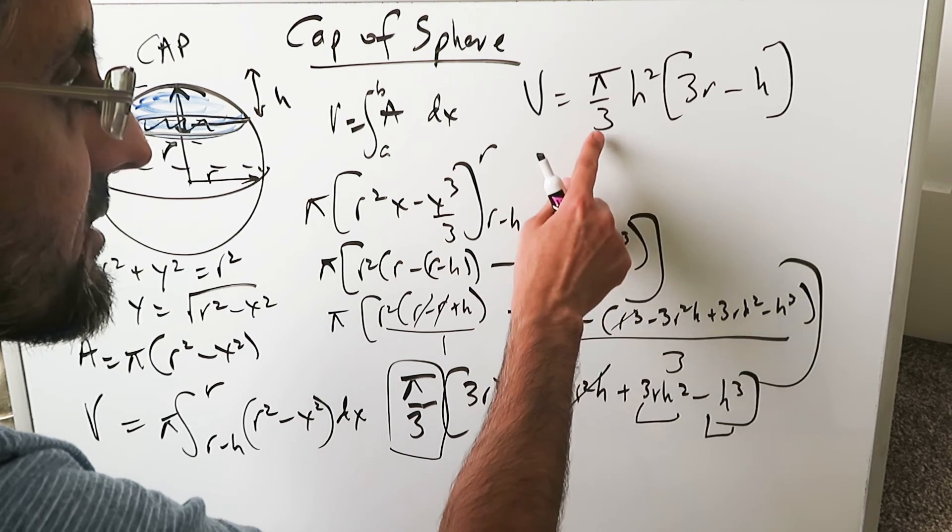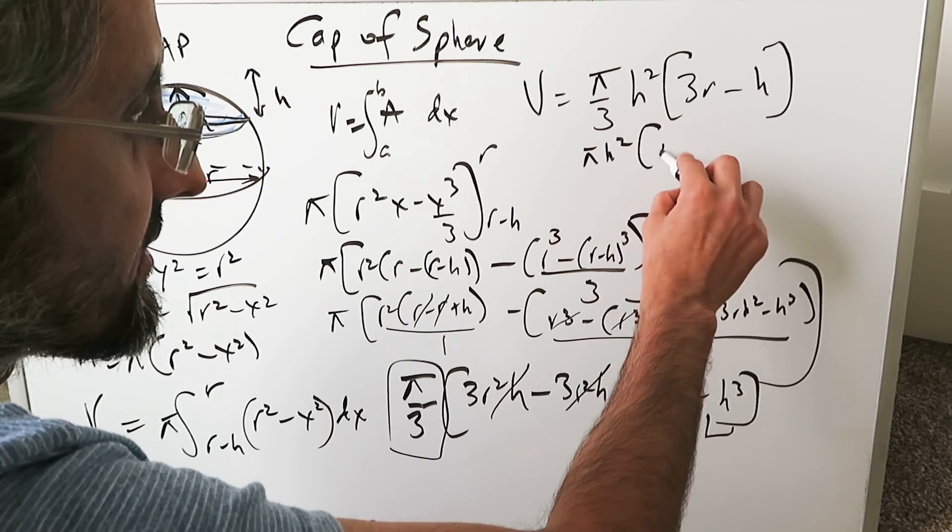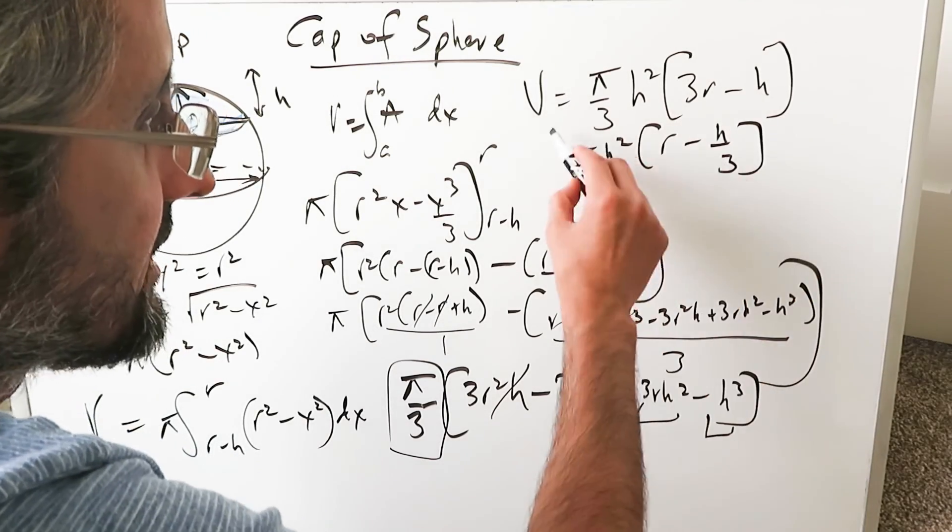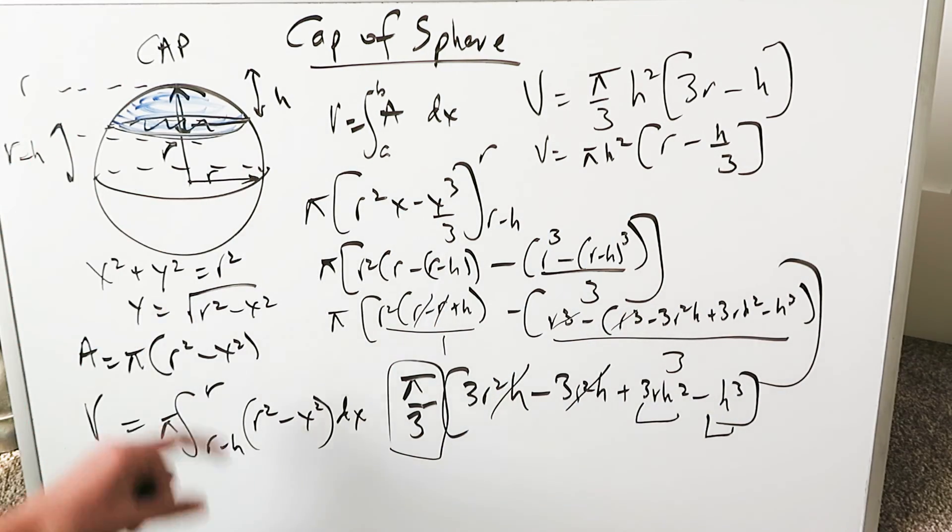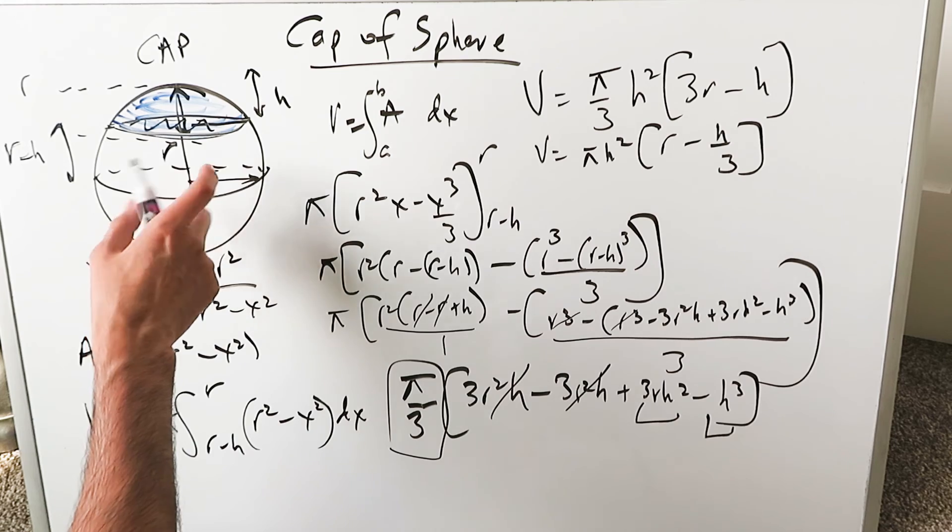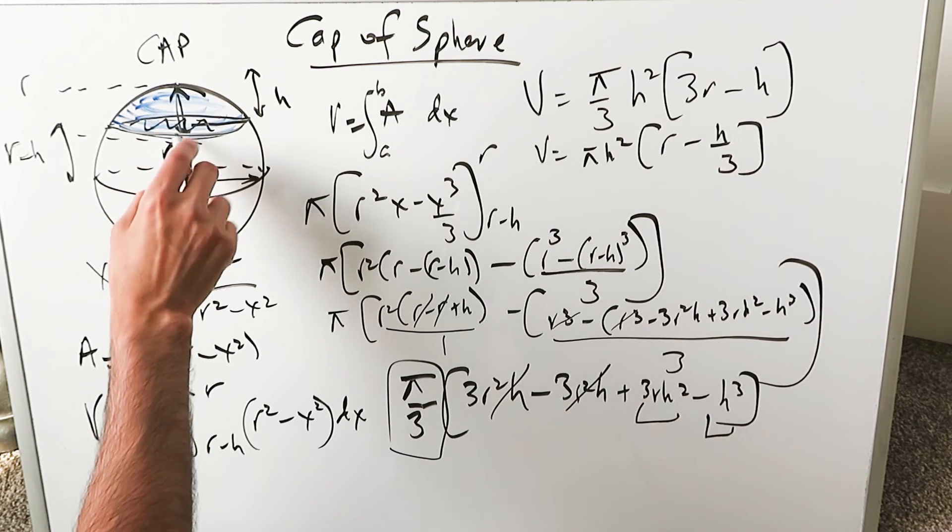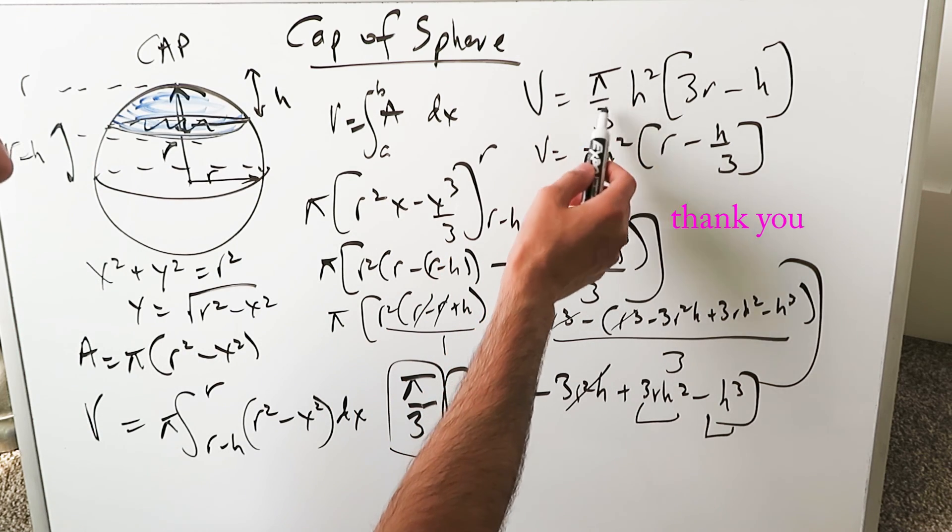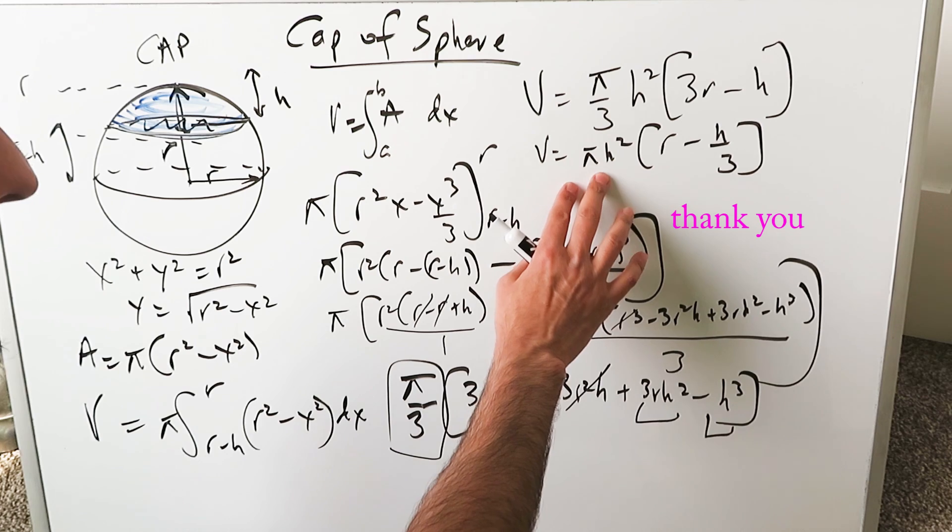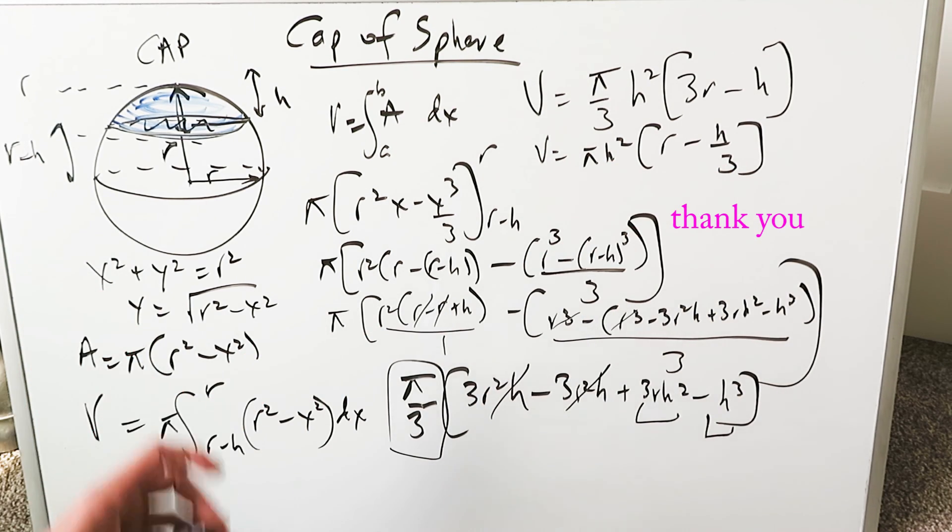You can re-represent it in a different way by pushing the 3 in. You'll have pi H squared. 3 R divided by 3 is just an R minus H over 3. It's an equally good expression. Each of these are equally good. If someone were to ask you based on this representation for a sphere with a radius R and a cap was demonstrated to be H units away from the top of that sphere and then down. All of these cross-sectional slices adding up to give a volume of this cap. What would that volume be? It would be either of these. Pi over 3 H squared times 3 R minus H or pi H squared times R minus H over 3. And those results will be right. Thank you for watching.